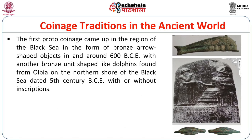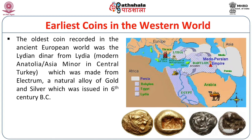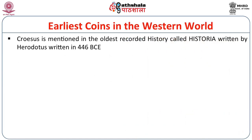The first proto-coinage in the world possibly came from the Black Sea region in the form of bronze arrow-shaped objects. Around 600 BC there were also objects shaped like dolphins from a region called Olbia on the northern shore of the Black Sea, dated to the 5th to 6th century BC, initially without inscriptions and later with them. The earliest coinage we know of came from a region called Lydia — modern Turkey — recorded by the historian Herodotus, who wrote the first Greek history of the world, Historia, around 464 BC.